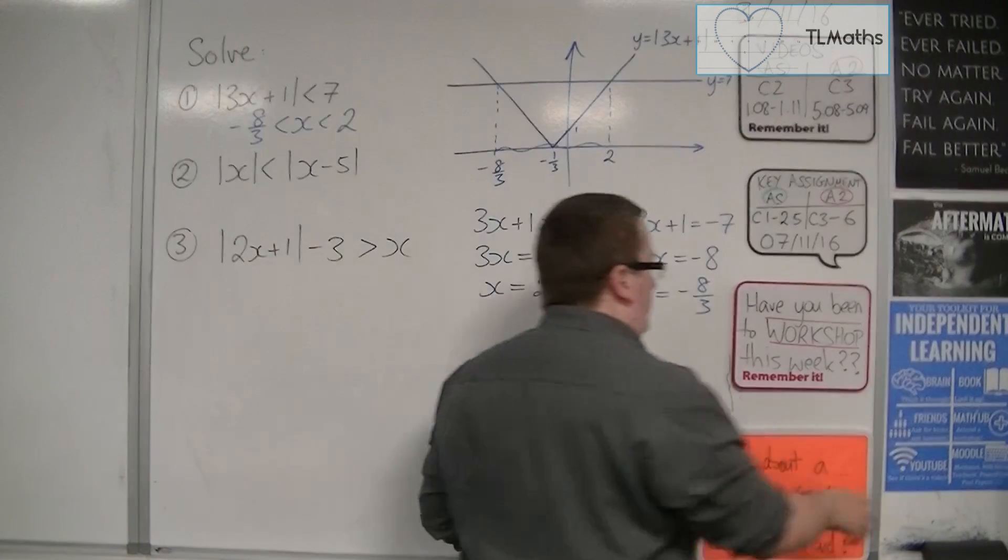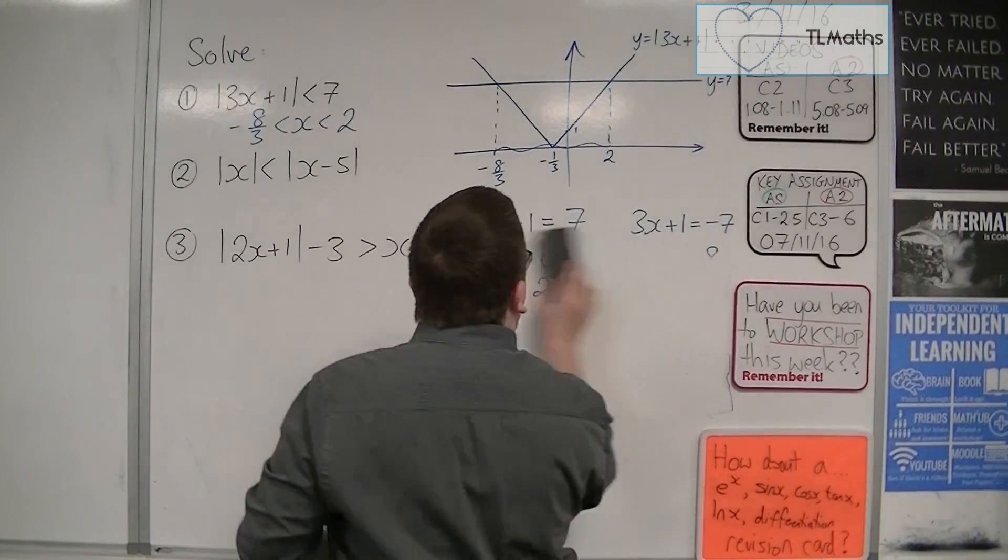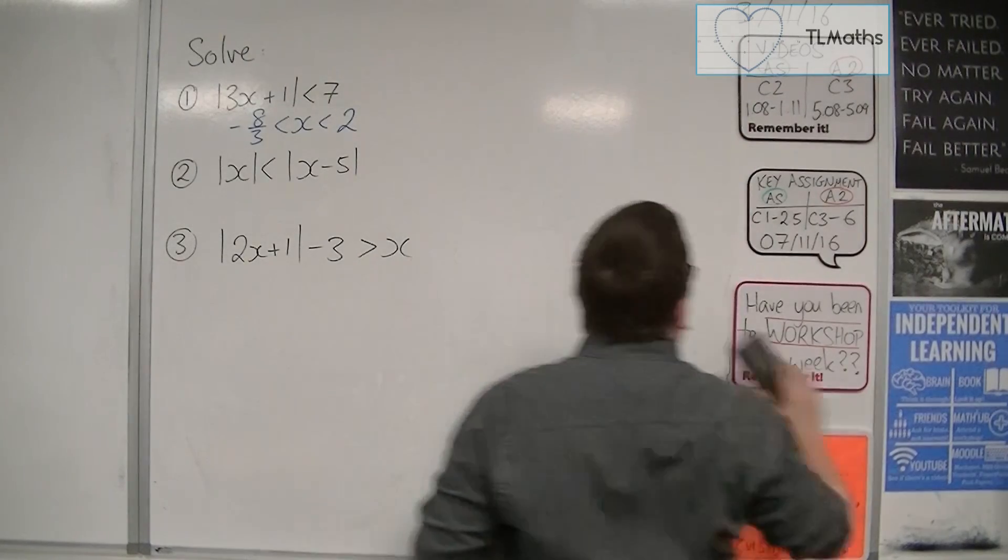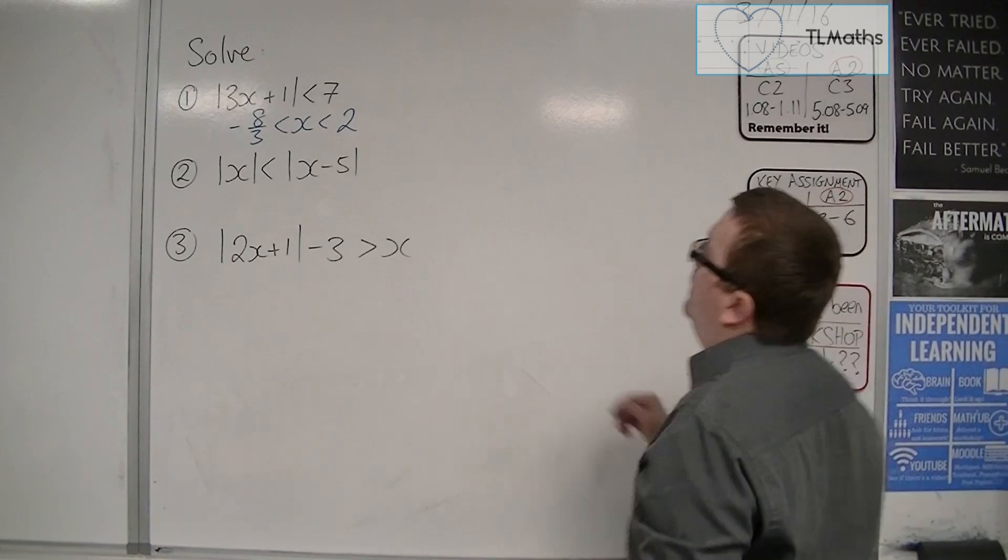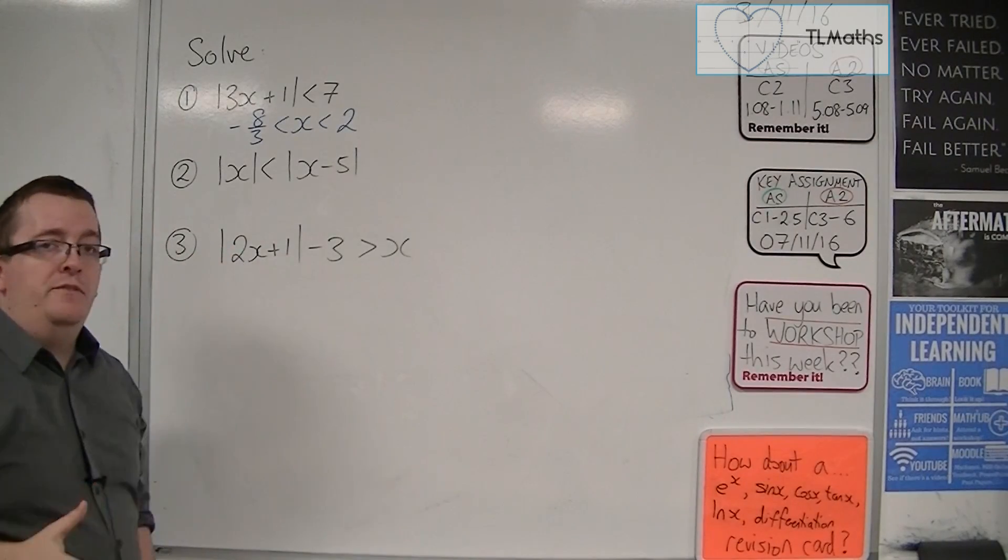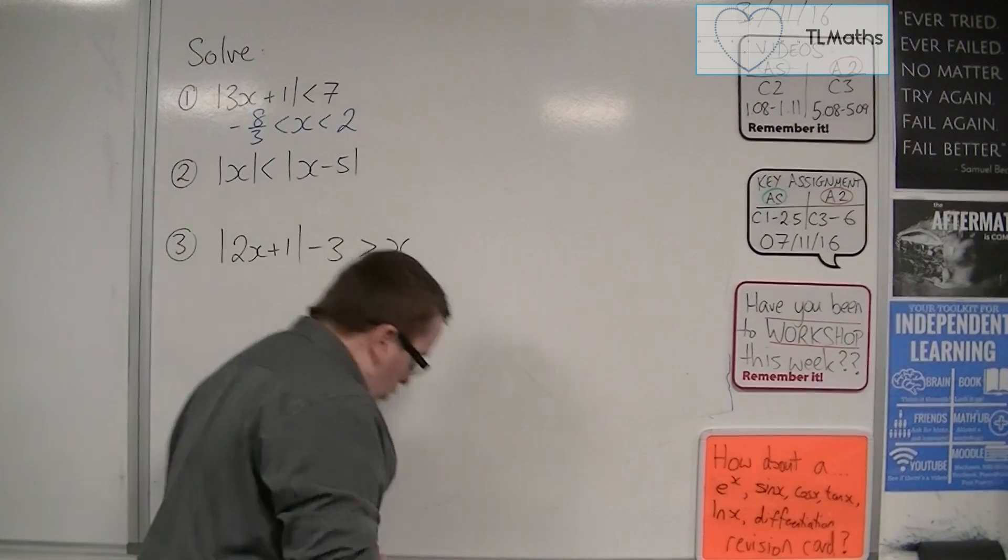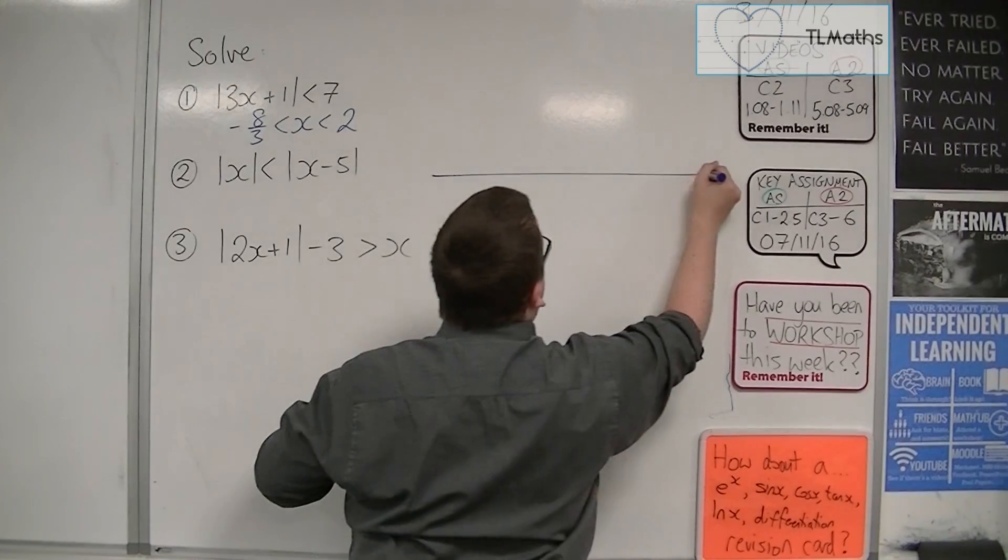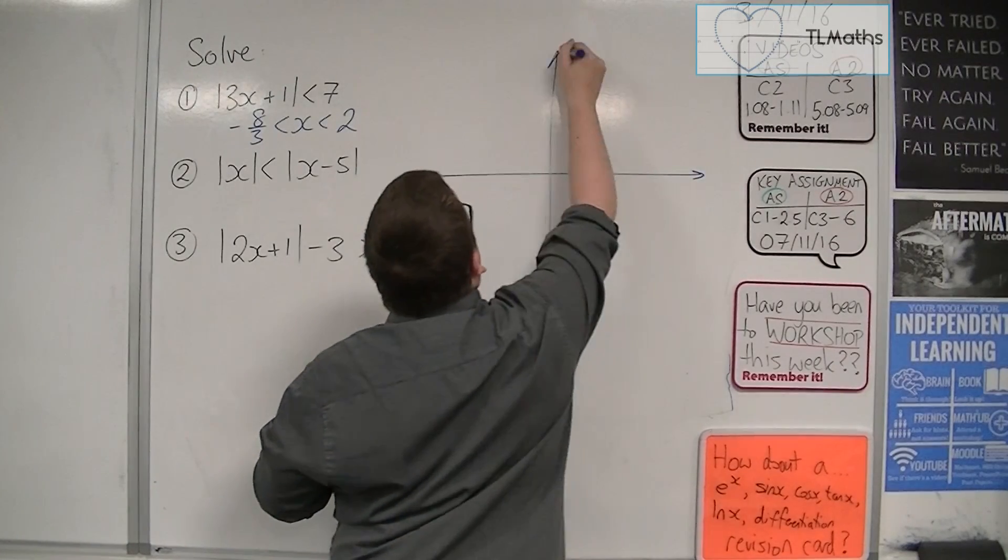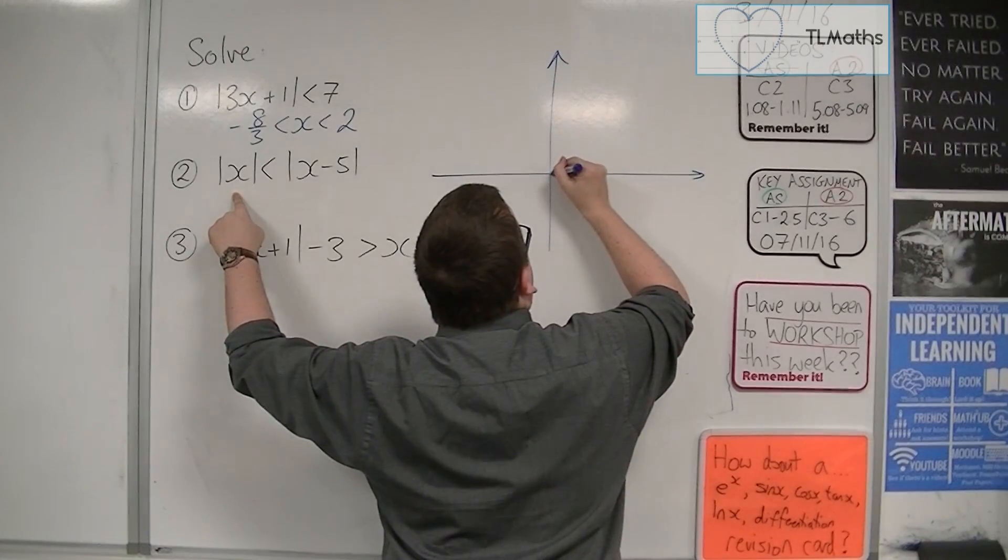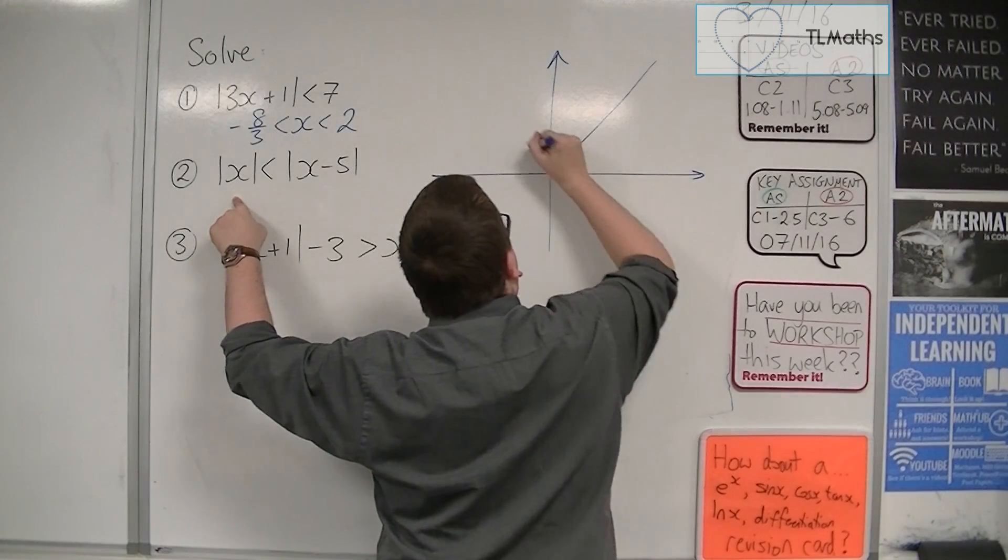Let's look at the next one. This one's a little bit more complicated. With the next one, we've got modulus of x is less than modulus of x minus 5. So we're going to have to sketch both of these on the same graph. So mod x, that's an easy one to sketch. Y equals mod x. There we are.